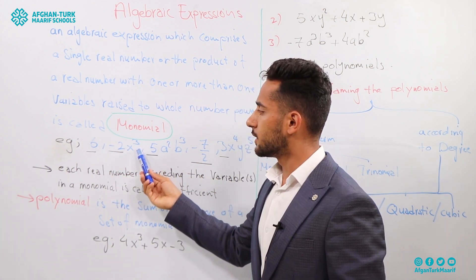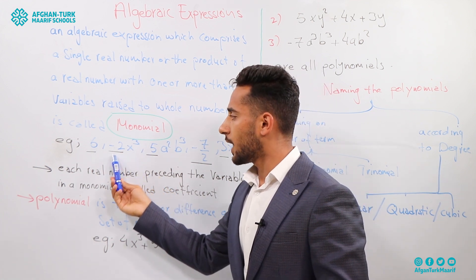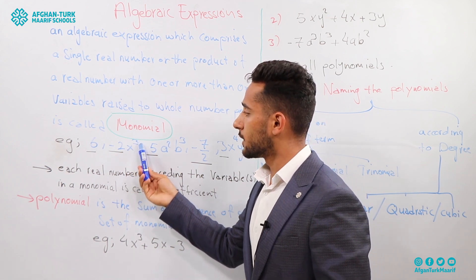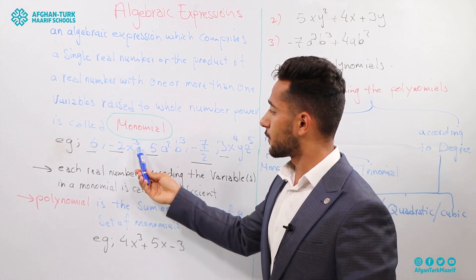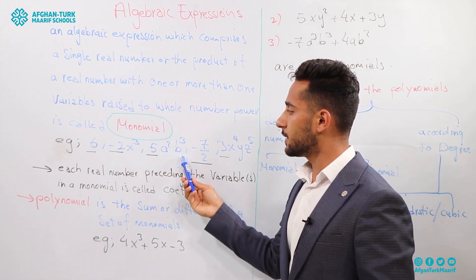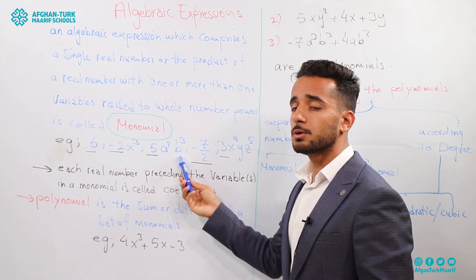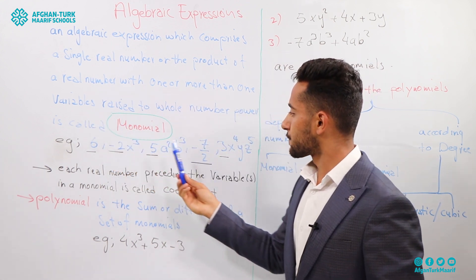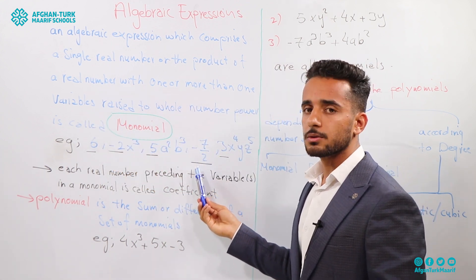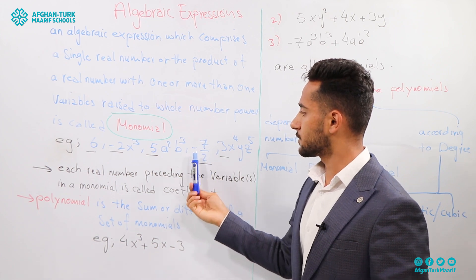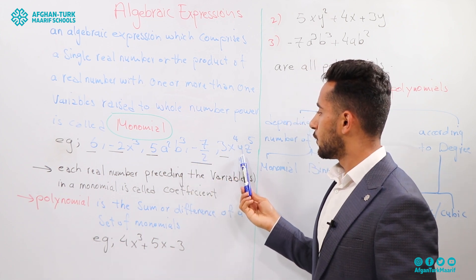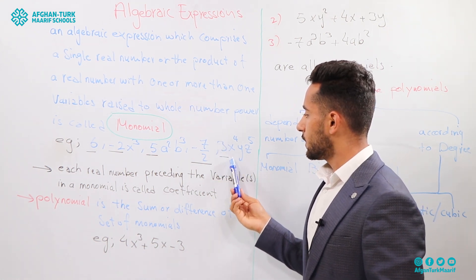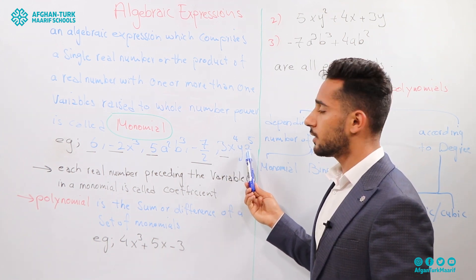Minus 2X to the power of 3 is also a monomial, because minus 2 is the real number, X is the variable, and 3 is the power of X, which is a whole number. 5A squared B cubed is a monomial with one real number and two variables. Minus 7 over 2 is also a monomial — it's a real number. And 3X to the power of 4 times Y times Z to the power of 5 is also a monomial, with one real number and three variables whose powers are whole numbers.